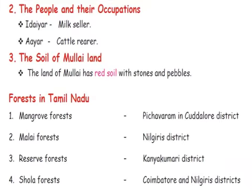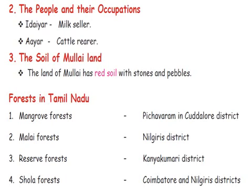The people and their occupations in the Mullai region: Idaer means milk seller — the people who sold milk were called Idaer. Ayer means cattle rearer — the people who had cows and goats, fed them, and took care of them. The soil of Mullai land was red and had stones and pebbles — small, shining, round stones.